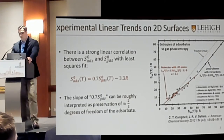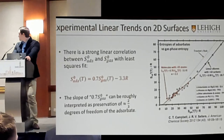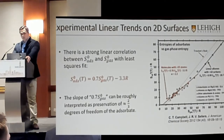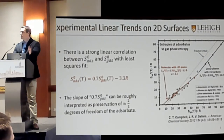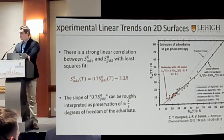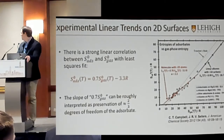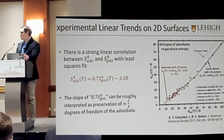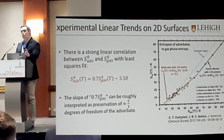They performed a linear least squares regression. Apart from the predictive capability it could be used for, the authors also suggested that there's some underlying physics going on that this equation can explain. In particular, the slope of 0.7 — that's approximately two-thirds — represents the degrees of freedom allotted to the molecule when it adsorbs on the catalytic surface.